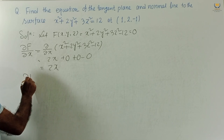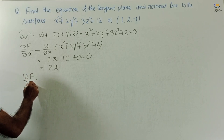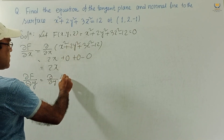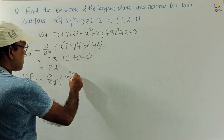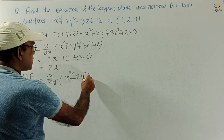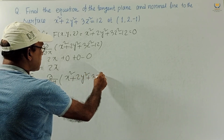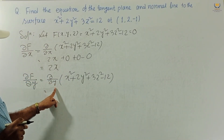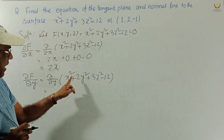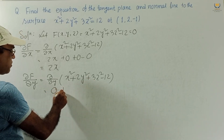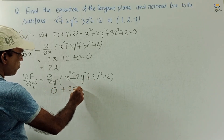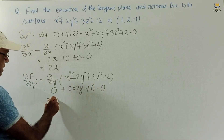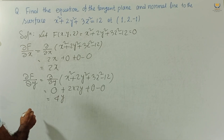Next, we find ∂f/∂y. This is ∂/∂y of (x² + 2y² + 3z² - 12). Differentiating with respect to y, with x and z constant: x² gives 0, 2y² gives 2×2y, and the rest gives 0. Ultimately we get ∂f/∂y = 4y.